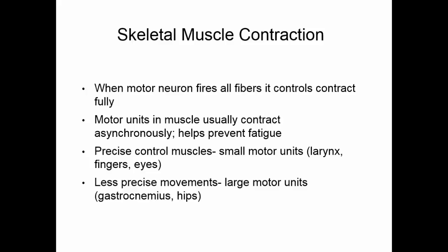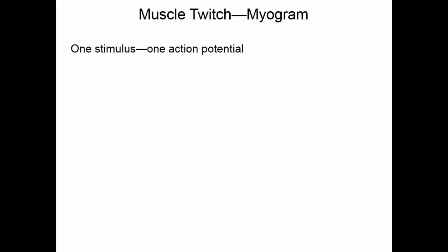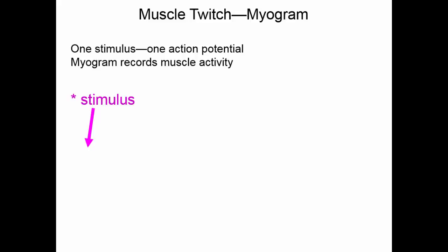Less precise movements will have larger motor units — one motor neuron controlling 50 or 60 muscle cells, for example the gastrocnemius, that big muscle in your calf, which does not require very precise movement. If we want to plot a muscle twitch, we can do a myogram — an instrument that records muscular activity to examine one stimulus, one action potential on a muscle cell. Starting with a stimulus, there will be a short period of time that the muscle does not respond at all — this is called the latent period.